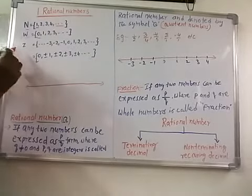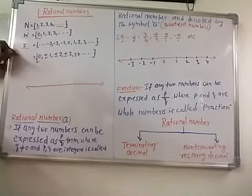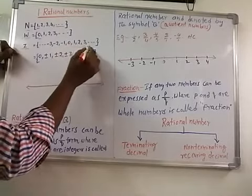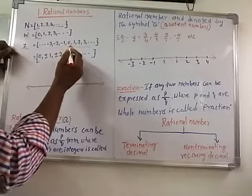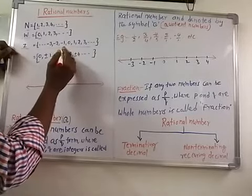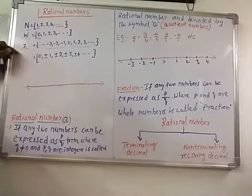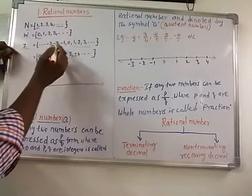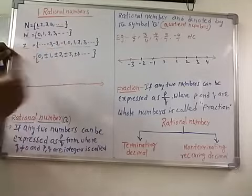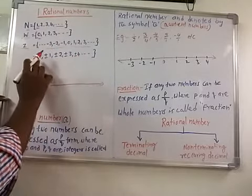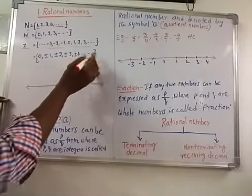Now what is an integer? Whole numbers combined with the negative natural numbers are called integers. They are {..., −3, −2, −1, 0, 1, 2, 3, ...}.